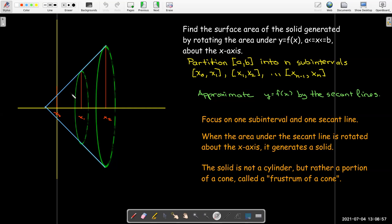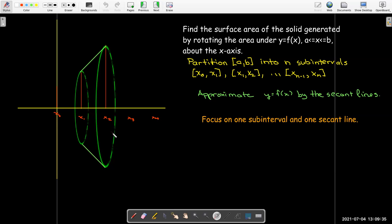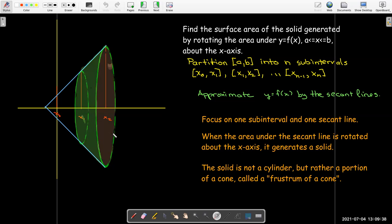So let's see if we can do some geometry and figure out a formula that will help us calculate the surface area of this frustum of a cone. Because once I know that surface area, then I can get an approximation by adding up the surface area of all of these slices, and then we'll let the number of slices go to infinity in order to obtain an integral.